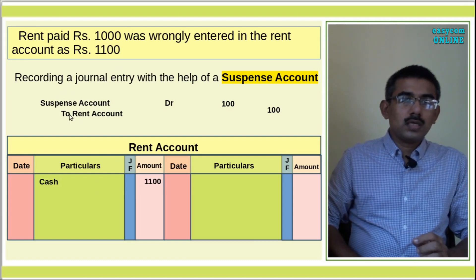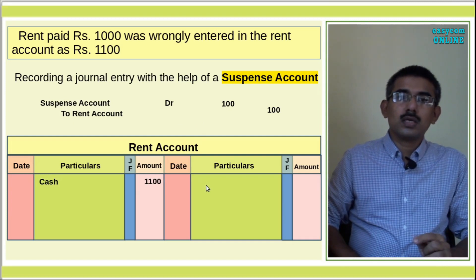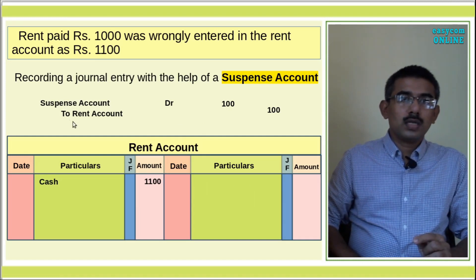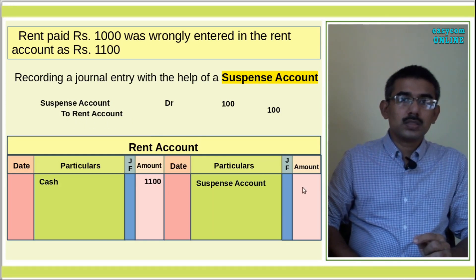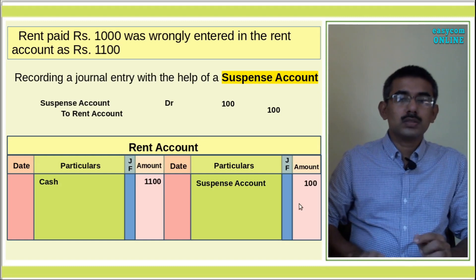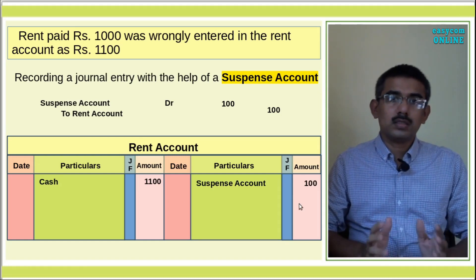This is the Rectification Entry. For the Rectification Entry, we will have a credit for the affected account. In this journal entry, there are two aspects: debit and credit. The credit is settled by the Suspense Account for Rs.100. This is how we can correct the accounts.